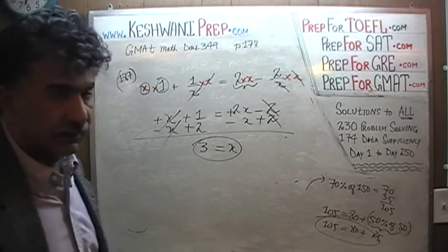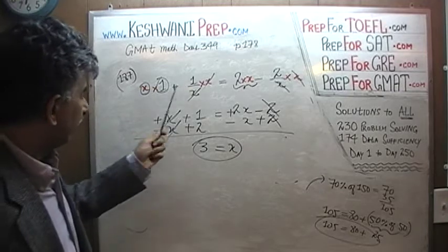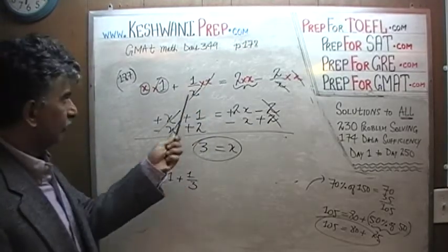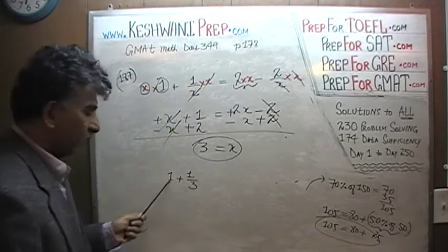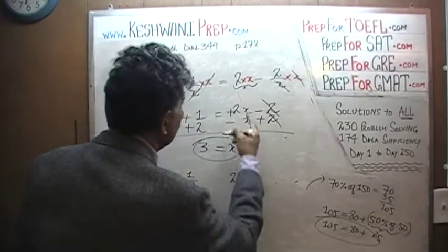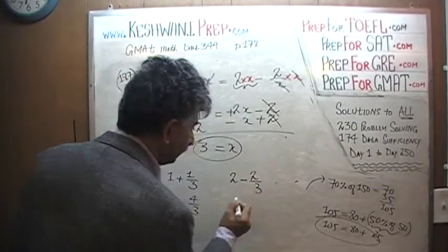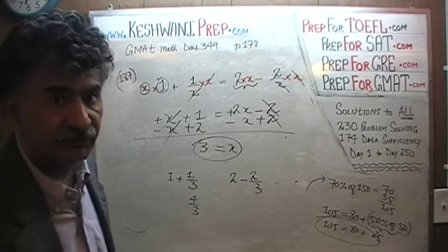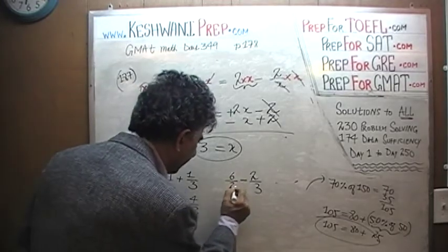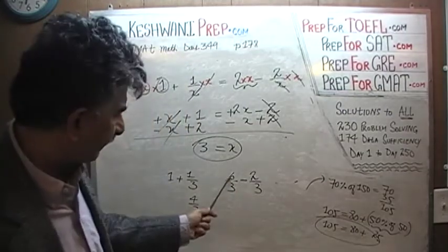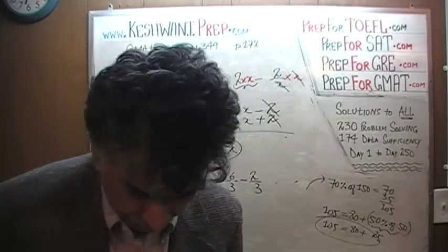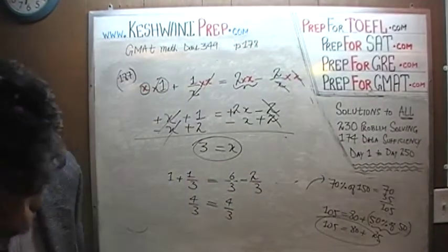Let's verify: 1 + 1/3 = 4/3 on the left side. On the right side: 2 − 2/3. Two can be written as 6/3, so 6/3 minus 2/3 is 4/3. Both sides equal 4/3 — confirmed! x equals 3. That was number 187. Let's move on to number 188, the last problem on the page.